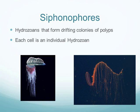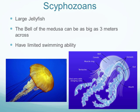Siphonophores can also be found in the deep ocean. Scyphozoans are your large, typical jellyfish — when most people picture a jellyfish, they're imagining a scyphozoan. These have a bell-shaped medusa — a prominent, rounded, mushroom-cap shape. They can grow up to three meters across. Most jellyfish have limited swimming ability and rely on ocean currents, though they can limitedly swim within a region by pulsating their medusa.